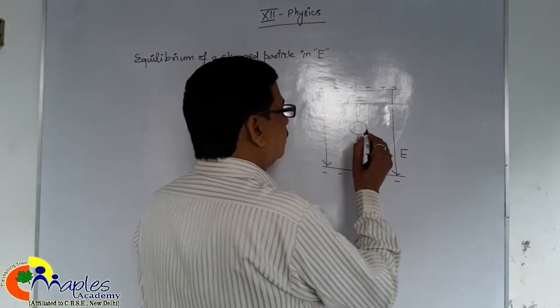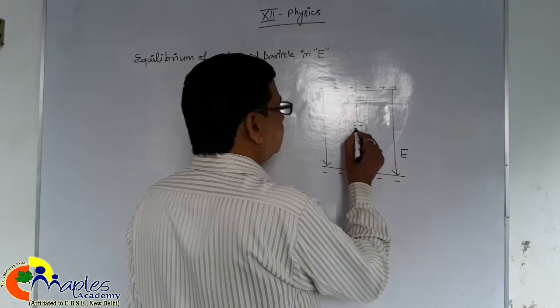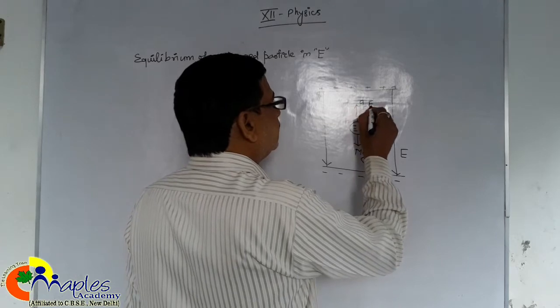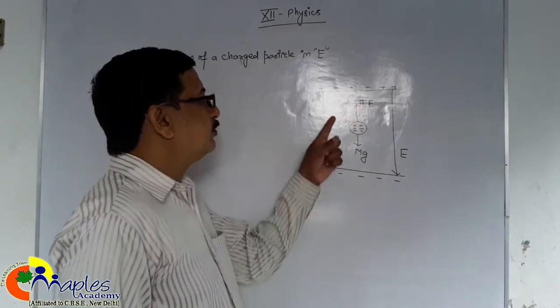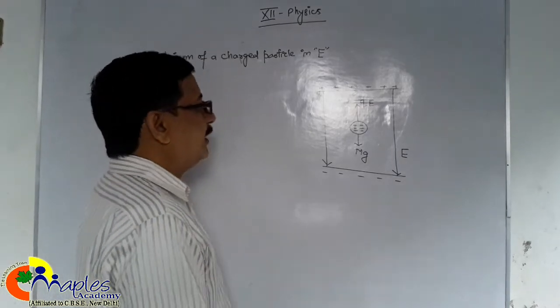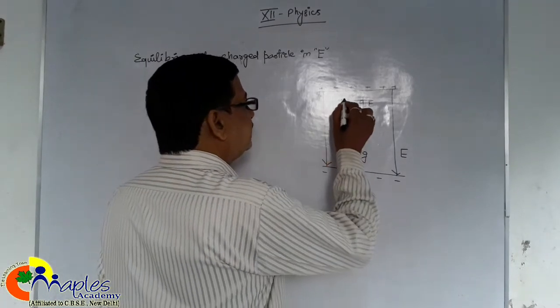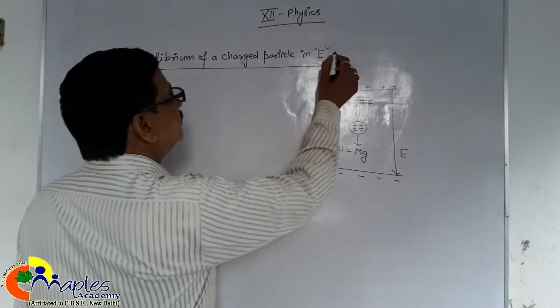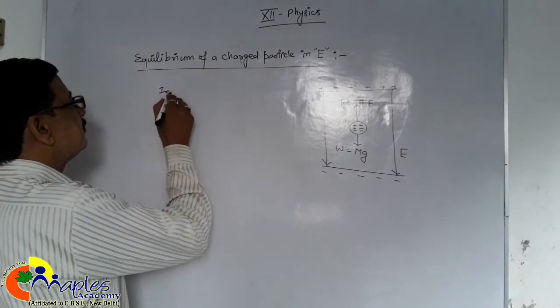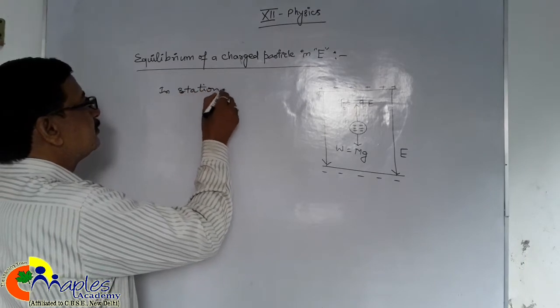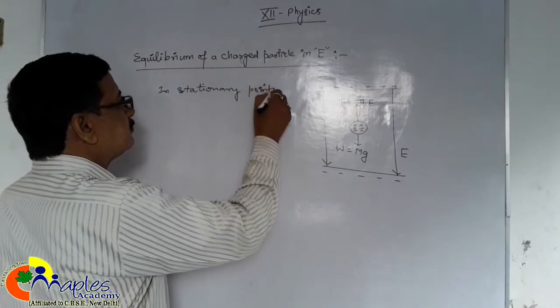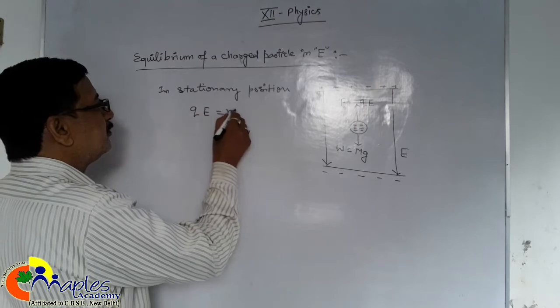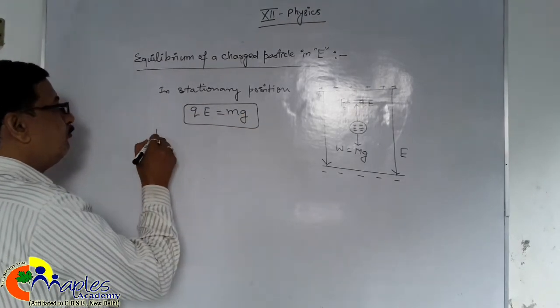And it has excess electron. So it is negatively charged. So force will act opposite to the electric field. If both the forces are equal then it is weight and it is electric force. Then it will be in equilibrium, in stable position, in stationary position. QE equals Mg for a drop.